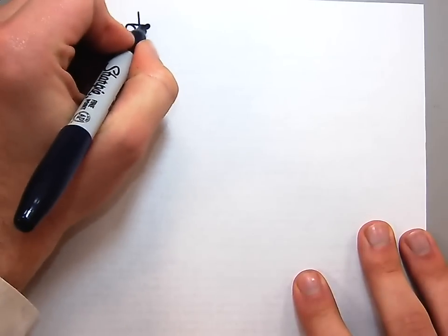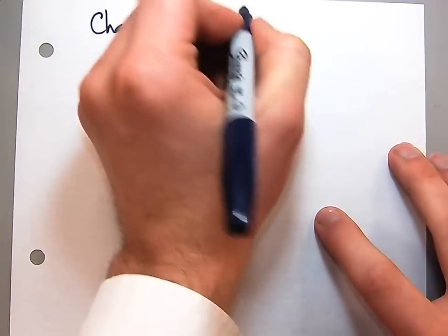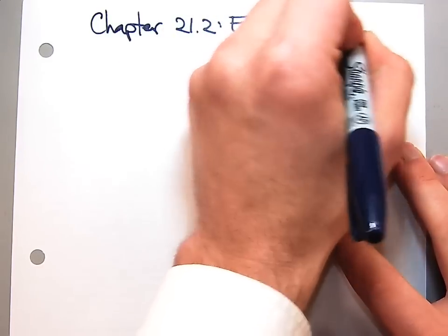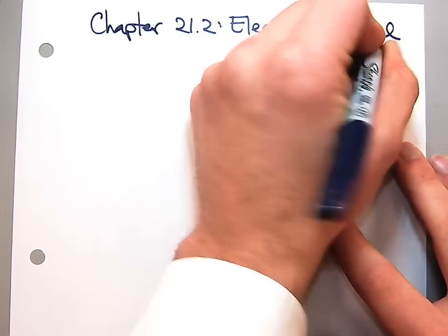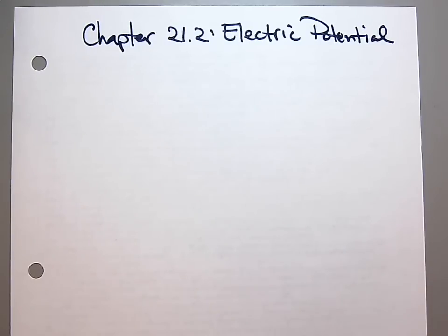Still in chapter 21.2 — not a lot of notes — and it's on electric potential. We've talked about two types of potential so far: elastic and gravitational. Electric potential is going to be very similar to gravitational, with a few little kinks. You know how that goes — it can't be too simple.